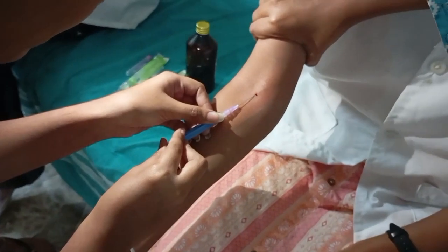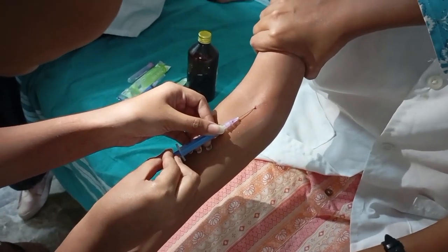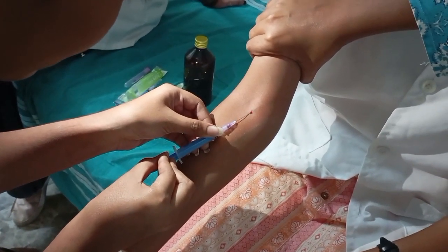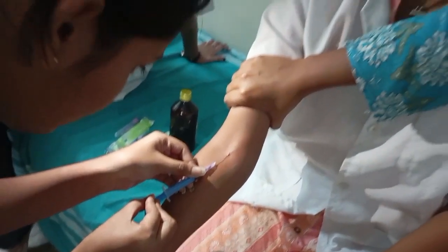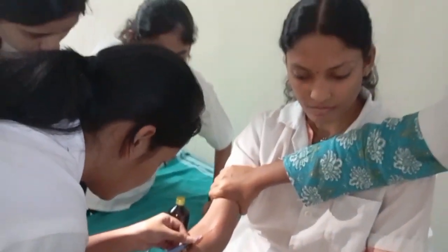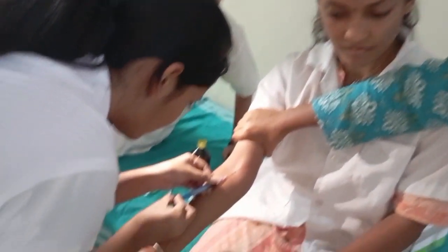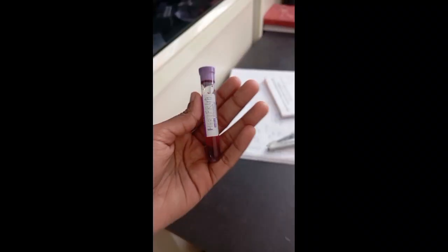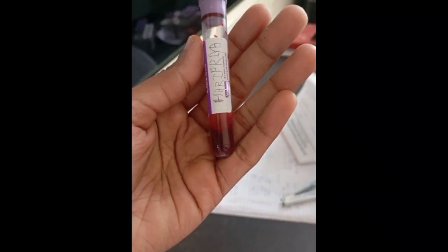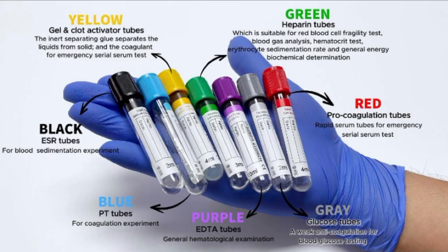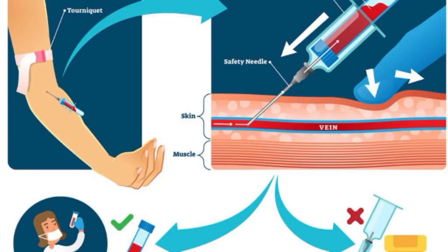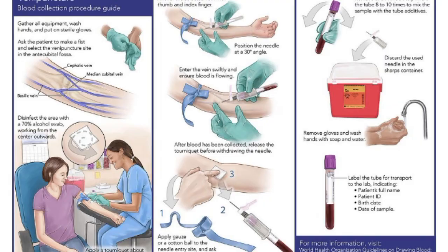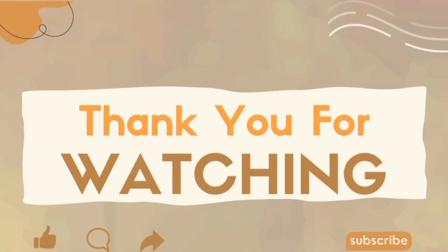If the wrong tube is used, the test values change and disease detection becomes difficult. Pathology also teaches us the importance of clean technique. If the skin is not cleaned properly, infection markers can become falsely high. Hemolysis, where blood cells break, happens if blood is pulled too fast, the needle is too thin, or the tube is shaken. Thank you for watching.